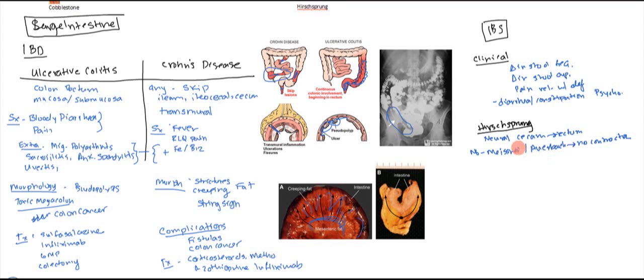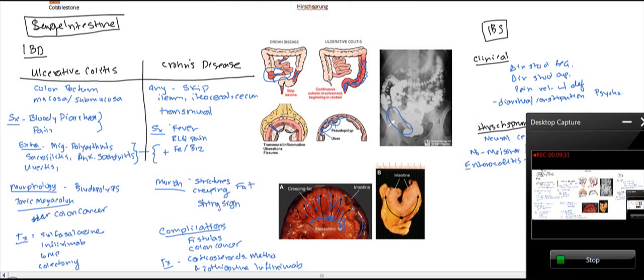Since it cannot contract, the fecal matter gets clogged up behind it and it's going to start becoming bigger and bigger. What we're worried about here is it leads to enterocolitis, it can lead to toxic megacolon, and if it ruptures it can lead to peritonitis. Real quick, just a quick diagram.